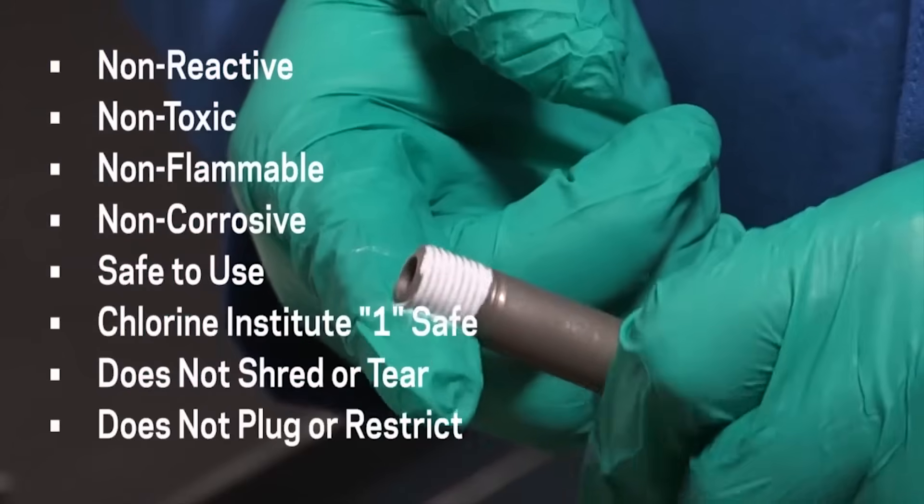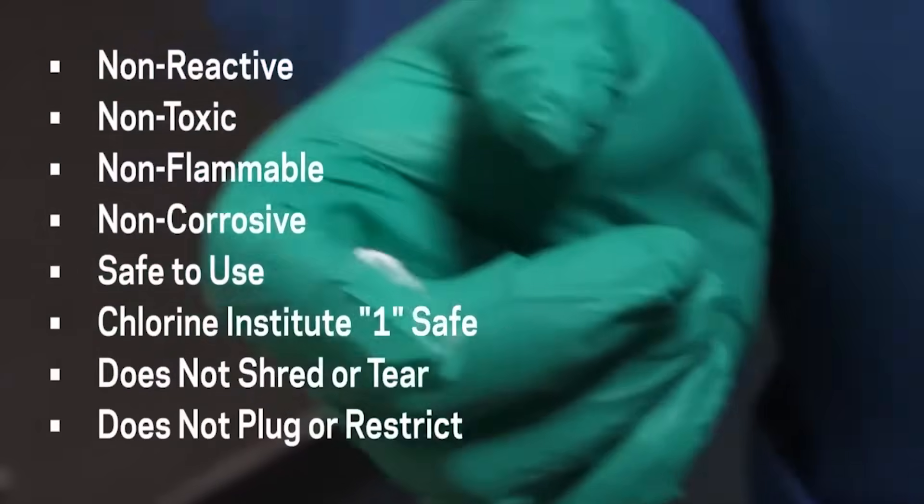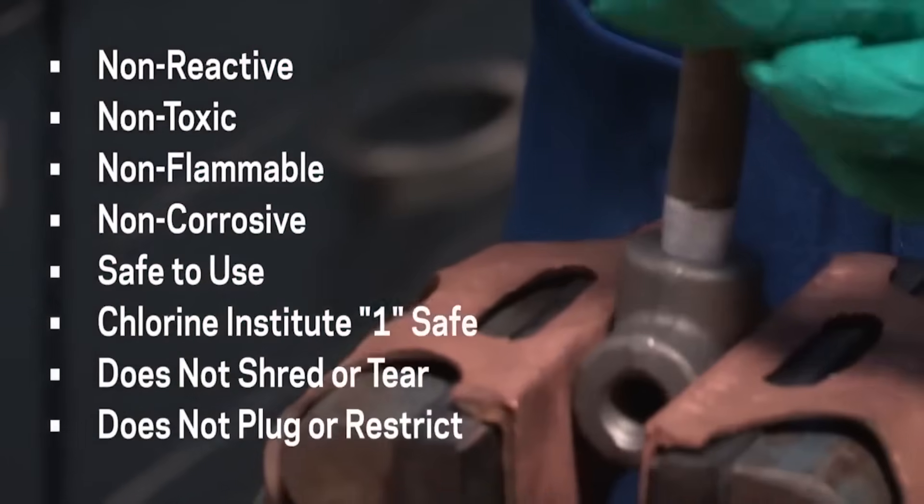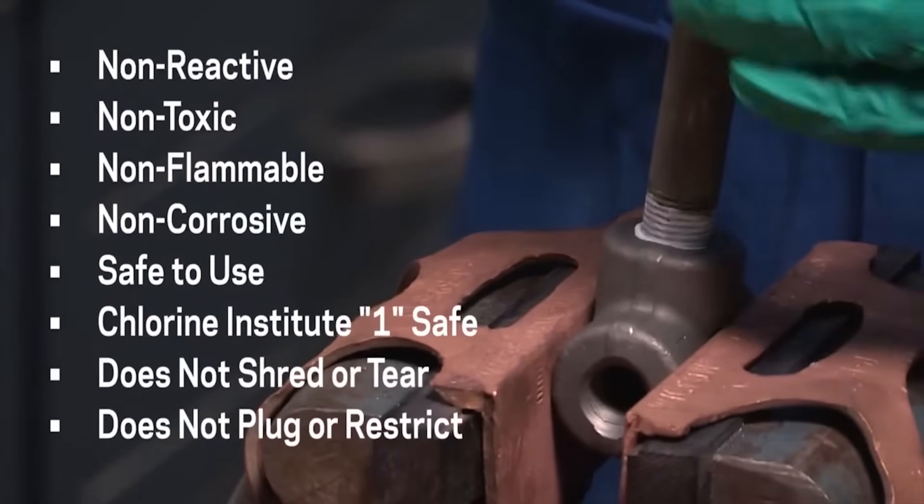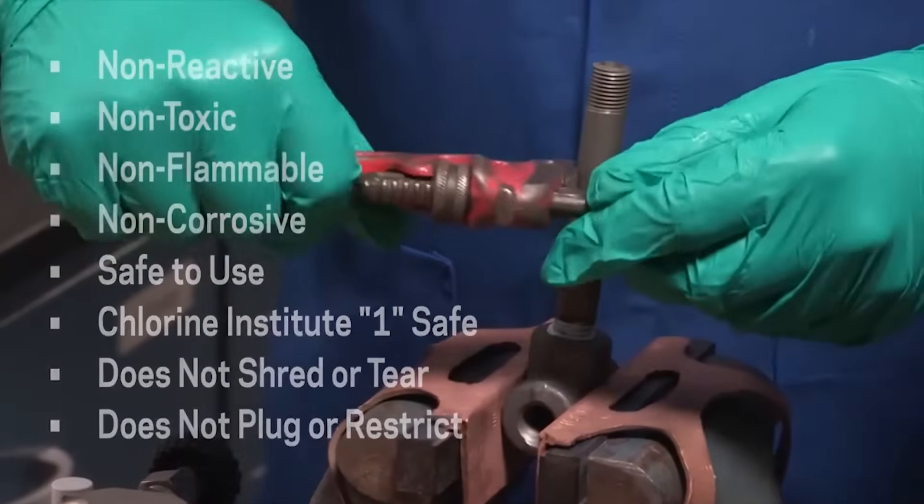It cannot plug or restrict critical piping, valves, or instruments like tape solids. TS-4 lubricates threads, preventing costly thread damage from galling and seizing during assembly. It also allows low breakaway torque for easy-to-break connections.